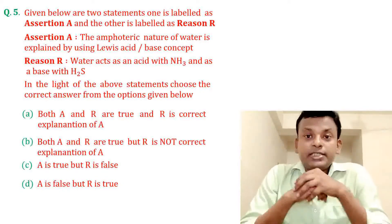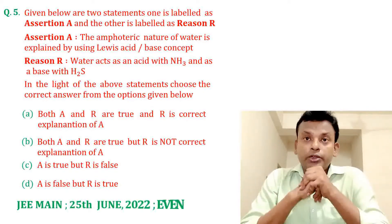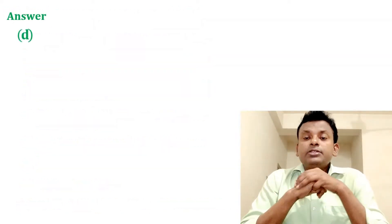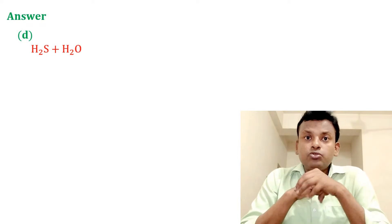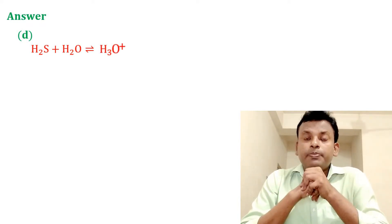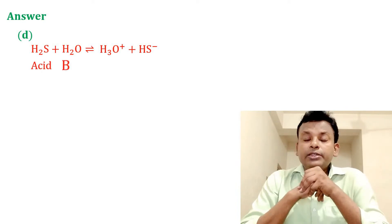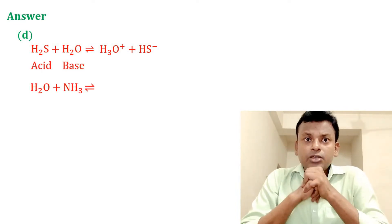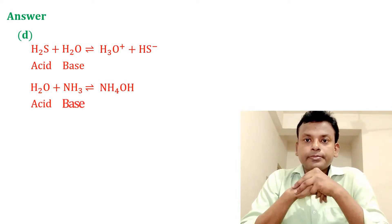This question was set in JEE Main 25th June 2022 evening shift. Answer is option D. H2S plus H2O gives H3O⁺ plus HS⁻ (acid and base). H2O plus NH3 gives NH4OH (acid and base). So option D is the correct answer.